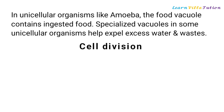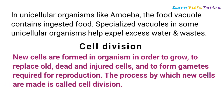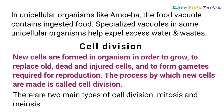New cells are formed in organisms in order to grow, to replace old, dead, and injured cells, and to form gametes required for reproduction. The process by which new cells are made is called cell division. There are two main types of cell division: mitosis and meiosis.